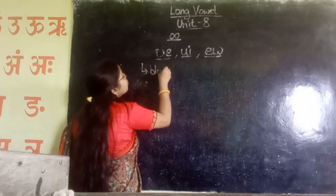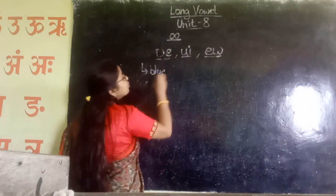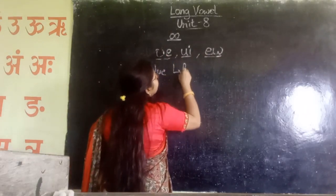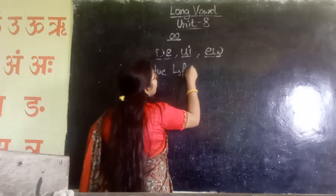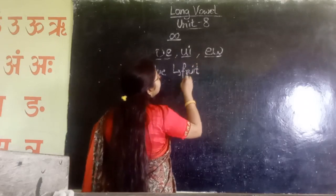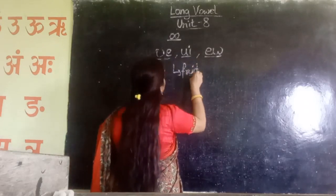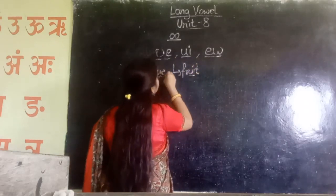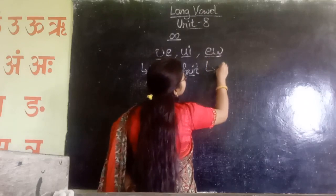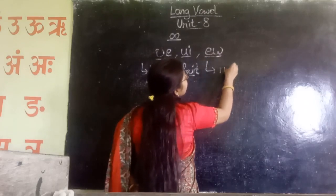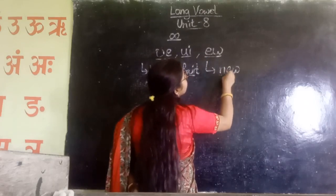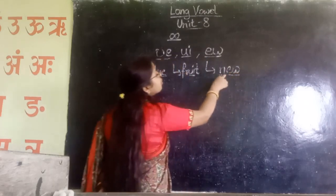For example: BLUE — that's the OO sound. FRUIT — OO T, FRUIT. And NEW — N EW, EW.